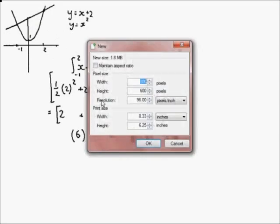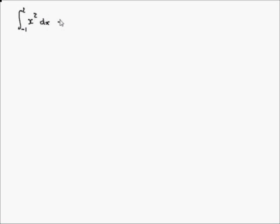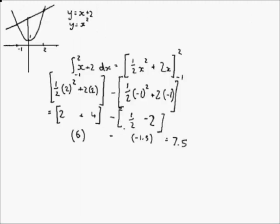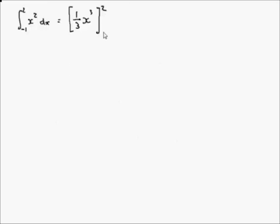Now, moving on to find the area under x squared. The integral with upper limit of 2 and lower limit of minus 1 of x squared dx. Raising the power by 1 gives x cubed, and multiplying by 1 over the new power gives a third x cubed, evaluated between upper limit of 2 and lower limit of minus 1. That gives one third of 2 cubed.